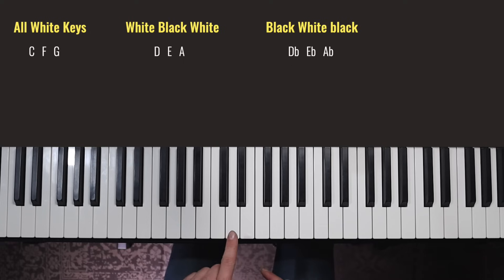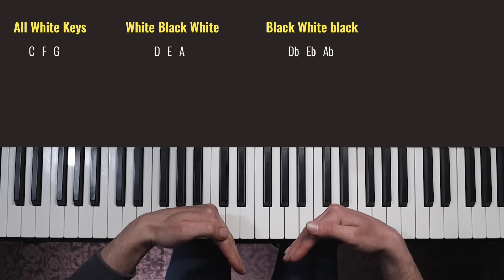If we just use those flat names a sec, if we think about those last two groups, D, E and A major were like that, white, black, white. D flat, E flat and A flat major were the other way around, black, white, black.